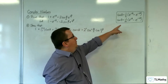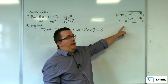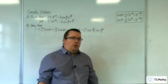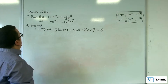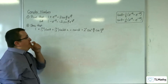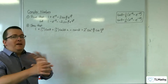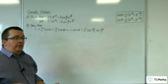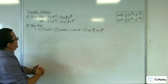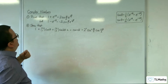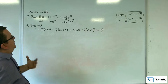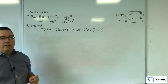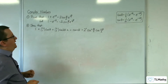In the previous video, we proved two results, and I'm just putting them on the board so we might find them useful in this example. This is where things get a little bit more complicated, and you're really going to need to keep your wits about you when you go through these types of problems about summing series. So, part one: we need to prove that 1 plus e^(iθ) equals 2 cosine(θ/2) times e^(iθ/2).